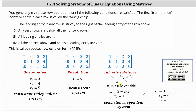We generally try to use row operations until the following conditions are satisfied. The first non-zero entry from the left in each row is called the leading entry. The conditions are: one, the leading entry in any row is strictly to the right of the leading entry of the row above; two, any zero rows are below all the non-zero rows; three, all leading entries are one; four, all entries above and below a leading entry are zero. Once all these conditions are met, the augmented matrix is in reduced row echelon form. Below are three examples of augmented matrices in reduced row echelon form.